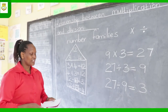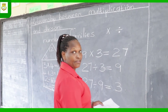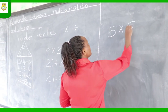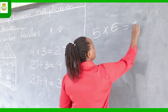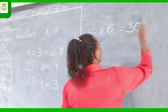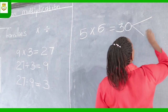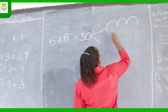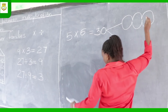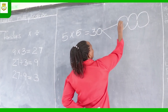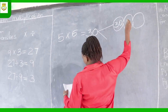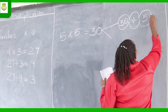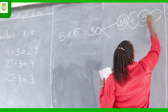The next example: 5 times 6 equals 30. In this case, the sum might be represented in a different pattern on the board. You could have 30 divided by 5 equals.